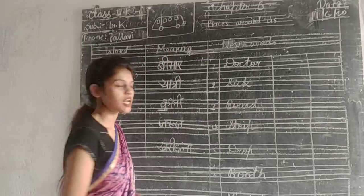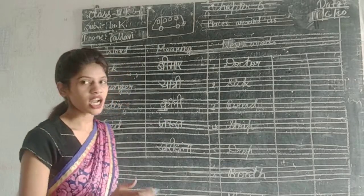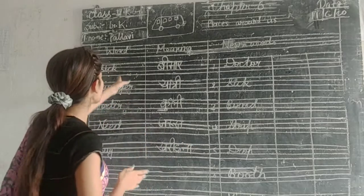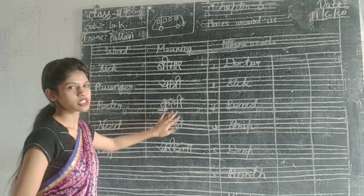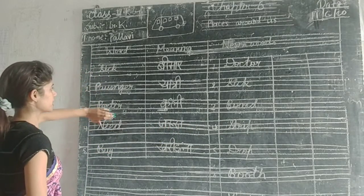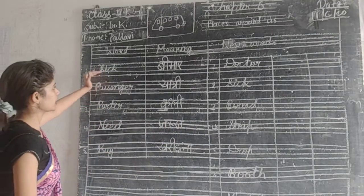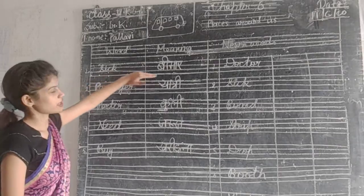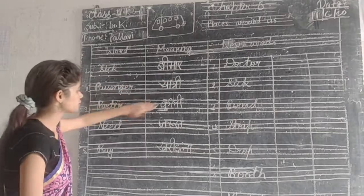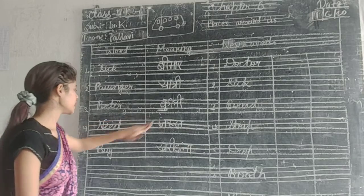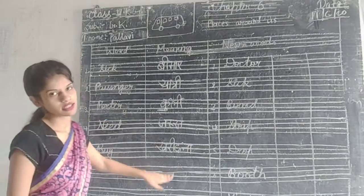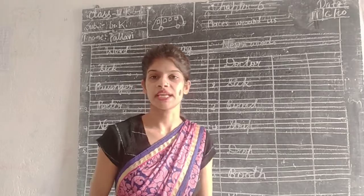Then we will start our board meeting. We will divide one side of the board and the other side of the mini. Our fifth board meeting. First number of the board meeting is our sick. Passenger, Yathri, Quarter, Pulley, Leave, Jaroorat, While, Kharita. This is our five board meetings.